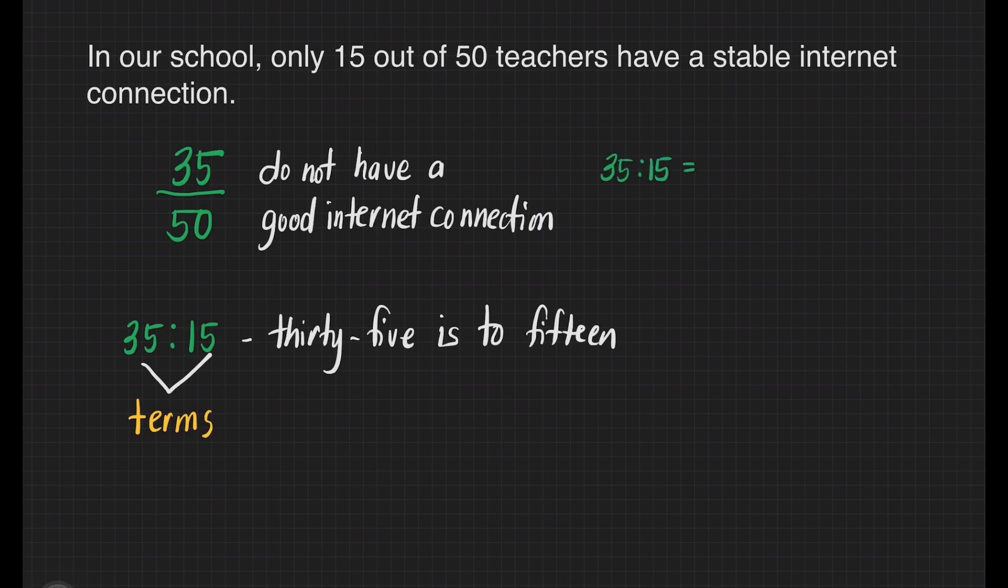For example, if we multiply 35 is to 15 by 10—remember, we have to multiply each term by 10—that will give us 350 is to 150. What if we divide each term by 5? That will give us 7 is to 3, which we consider as the lowest form or lowest term of this ratio.